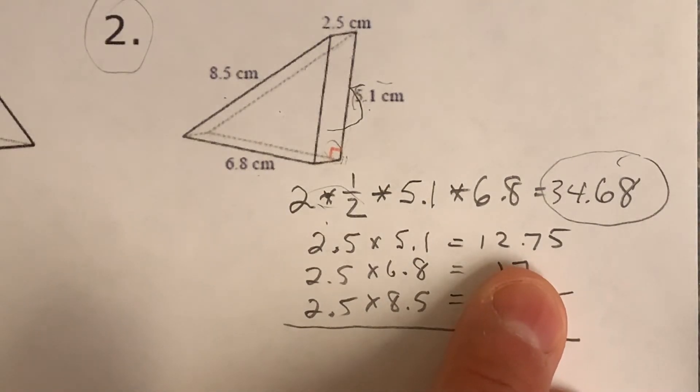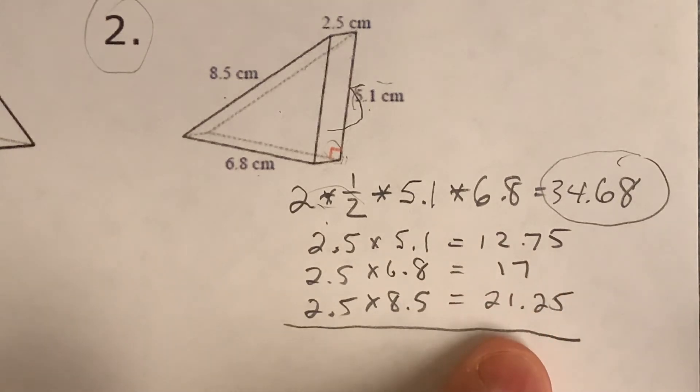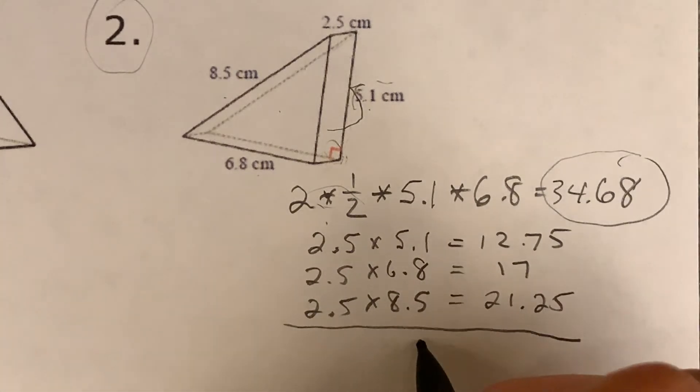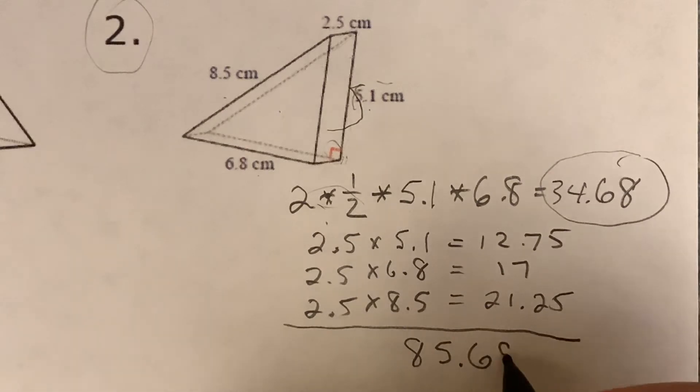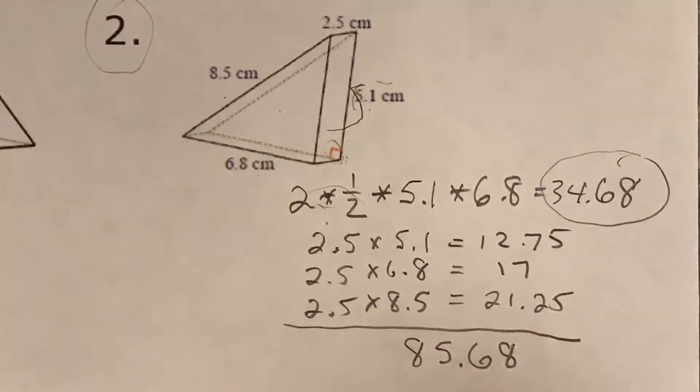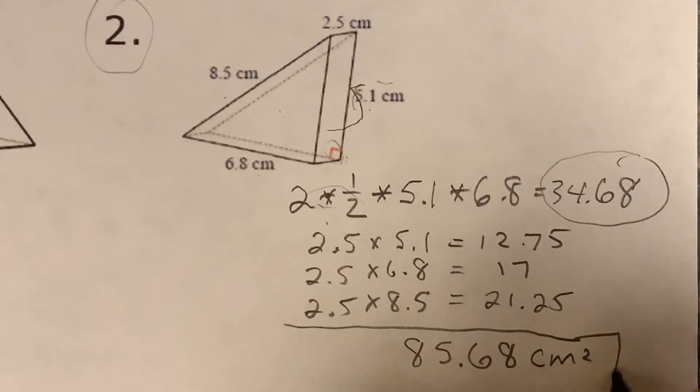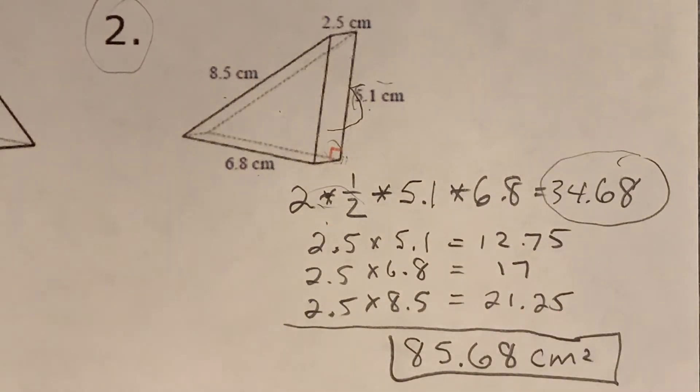So I'm going to add them all up now. 34.68 plus 12.75 plus 17 plus 21.25. And as always in the past, you should be doing this. You can pause the video if you want for a minute, do it yourself and then check. Remember it's in square units still, so centimeters squared. So there's that one.